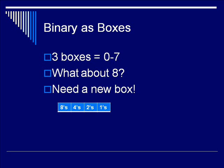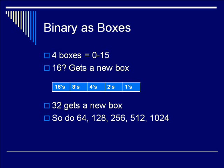To get to eight, you need a new fourth box on the far left representing eight. Using four boxes, you can represent the numbers zero through fifteen. To represent sixteen, you add another new box. Continuing this way, thirty-two, sixty-four, one-twenty-eight, two-fifty-six, five-twelve, and ten-twenty-four each get their own box. If you are taking the ARDMS exam, you should absolutely be ready to recognize numbers as binary and be able to translate numbers from decimal to binary and back.